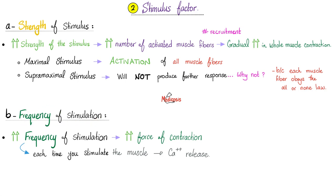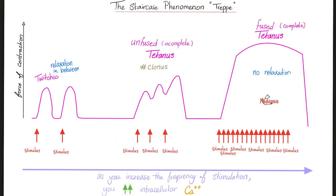How about the frequency of stimulation? Increasing frequency increases the force of contraction. Every time you stimulate the muscle you release calcium; with higher frequency you open more calcium channels, releasing more calcium from the sarcoplasmic reticulum, causing more myosin-actin binding. The staircase phenomenon — like going upstairs. A single stimulus gives a single twitch with relaxation in between. With increased frequency, another stimulus arrives before relaxation, causing repeated contractions. This is called unfused or incomplete tetanus, also known as clonus.